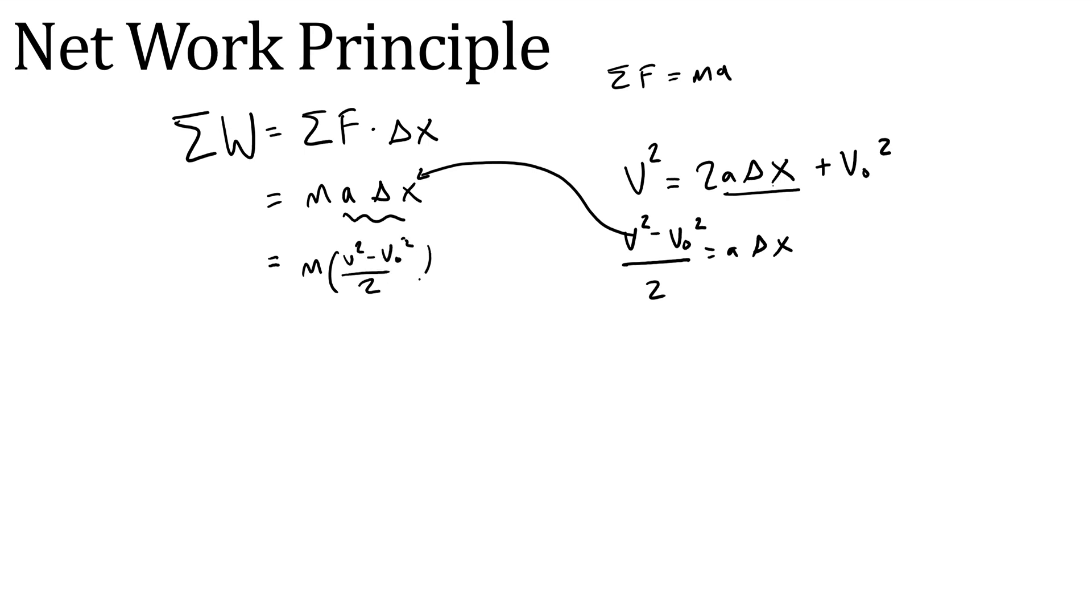So the network principle is as follows. Basically you're going to take the concept of network, network is net force times distance, only we're going to call this delta x, just to make it a little bit more recognizable to ourselves. And then we're going to replace the net force with mass times acceleration because the net force is always equal to mass times acceleration. Now this a times delta x, we're going to find that in a motion equation that doesn't have time, the ain't got no time equation, v squared equals 2a delta x plus v naught squared. We're going to rearrange this equation for a delta x, so v squared minus v naught squared over 2.